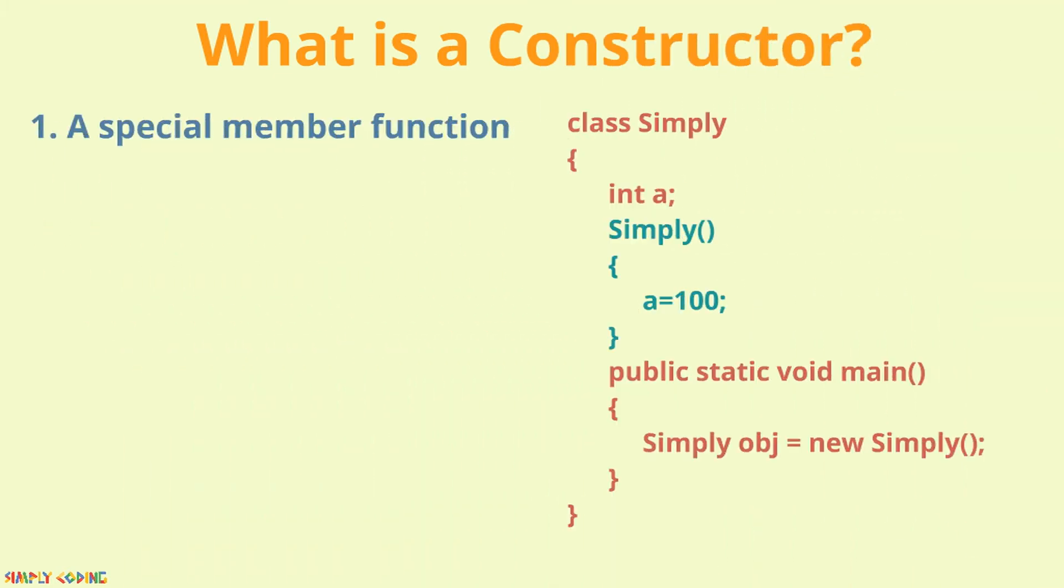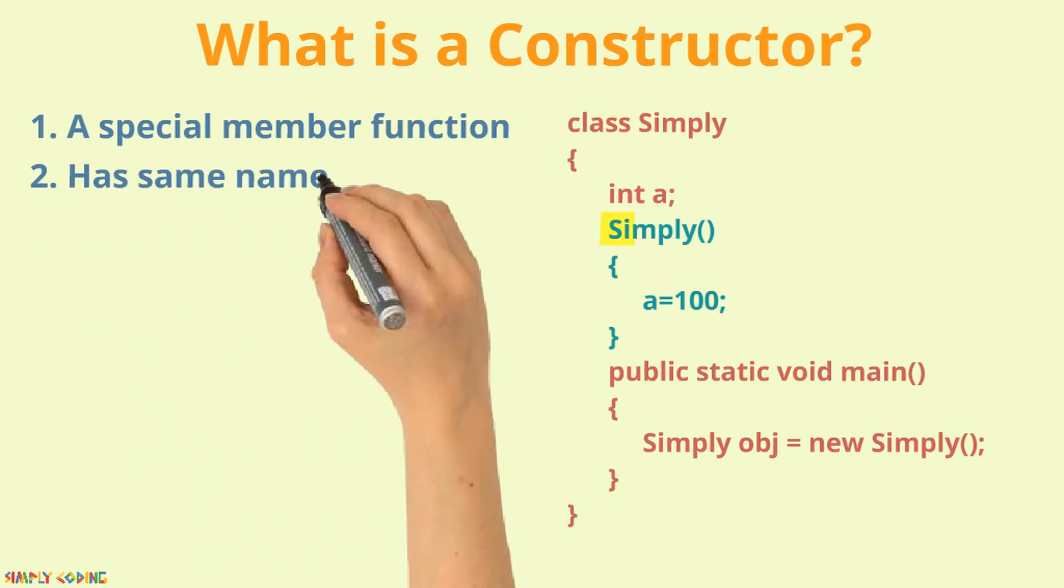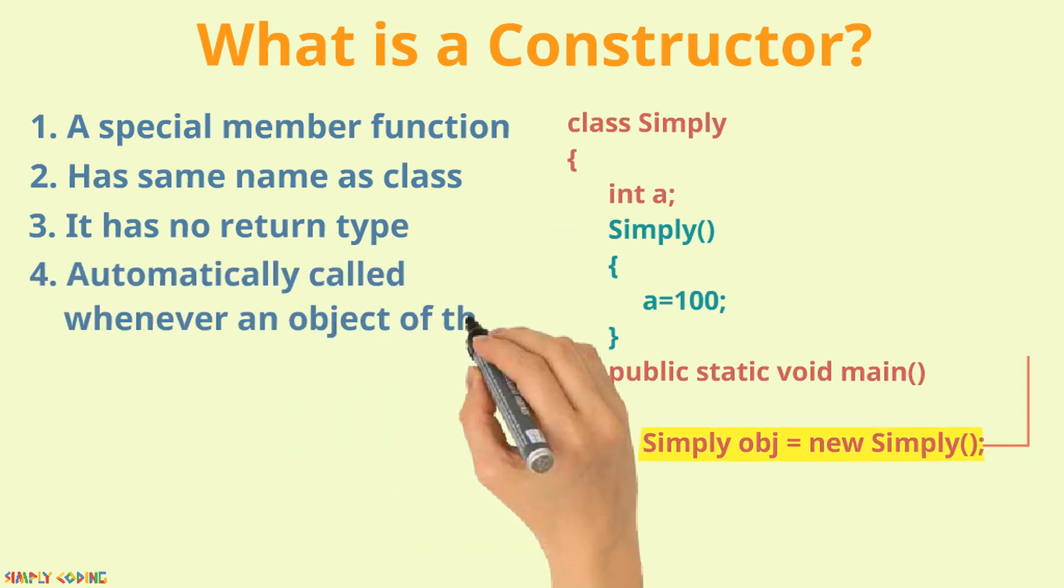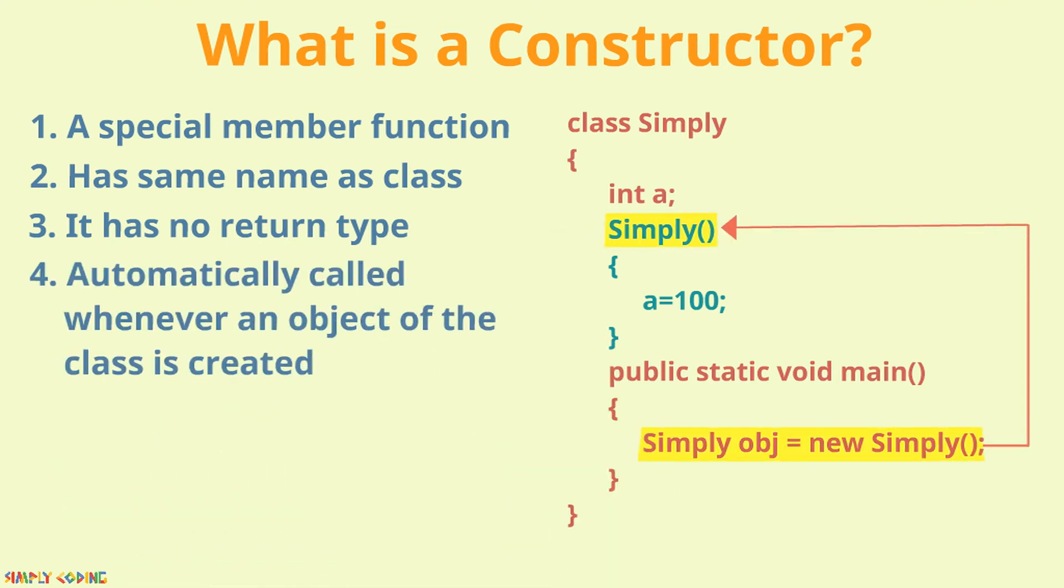A constructor is a special member function which has the same name as the class name. Unlike functions, it has no return type and it is automatically called whenever an object of the class is created.